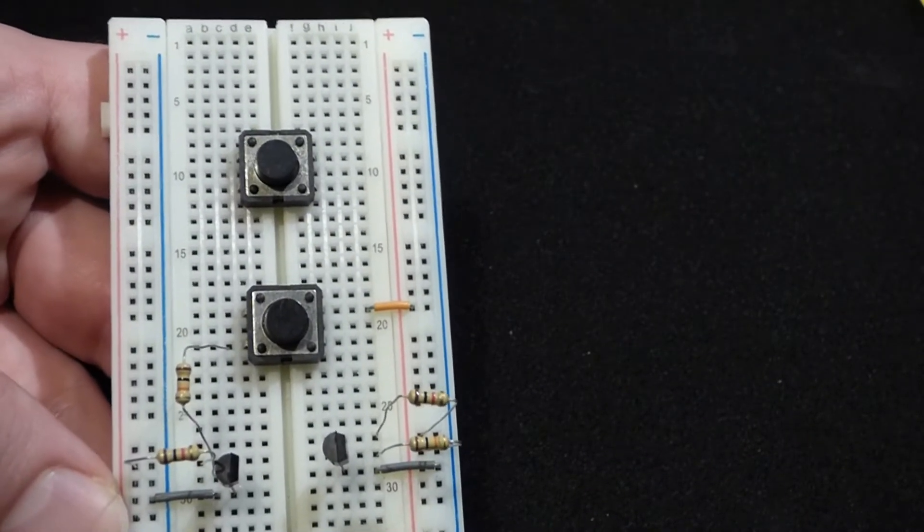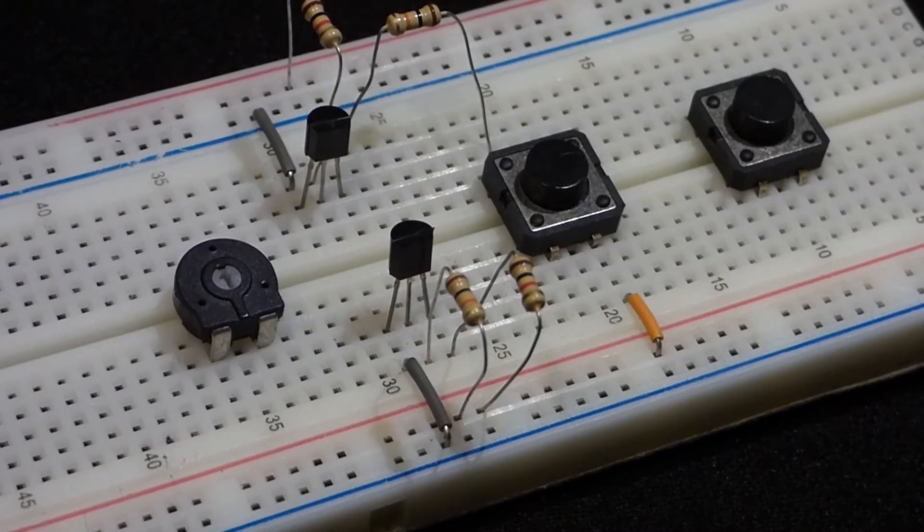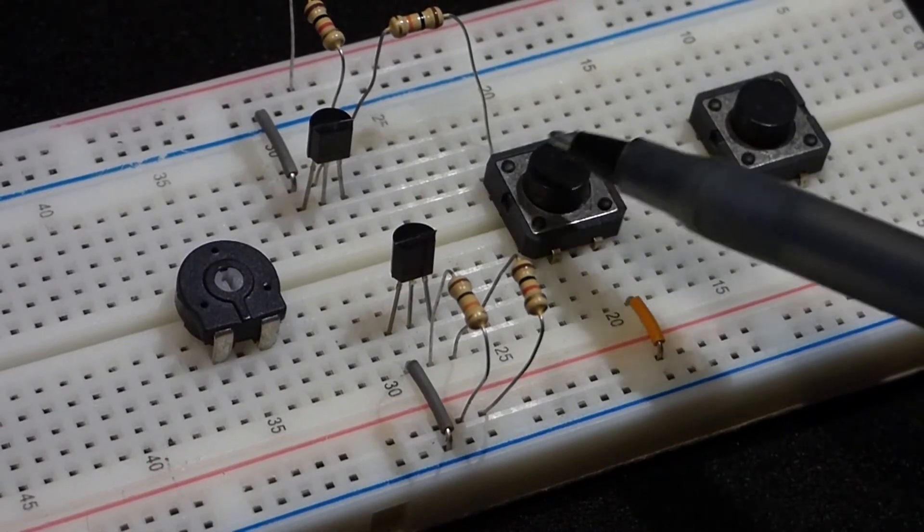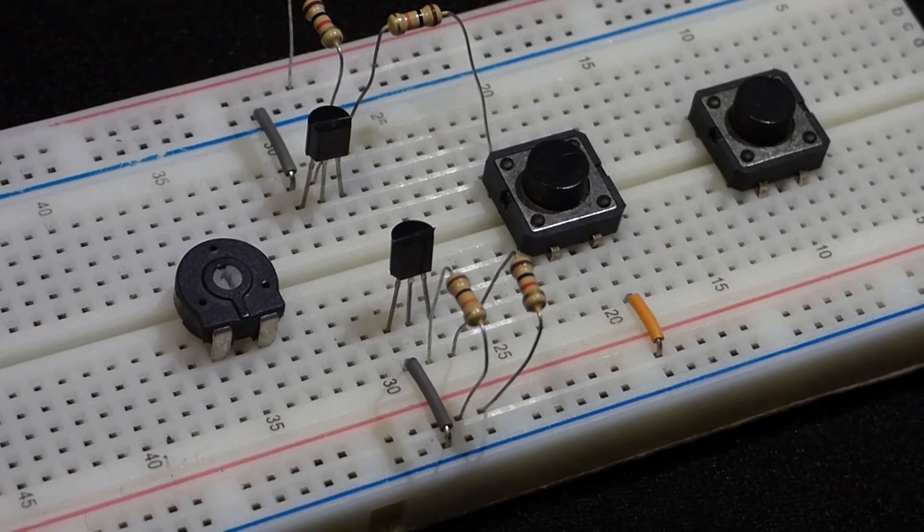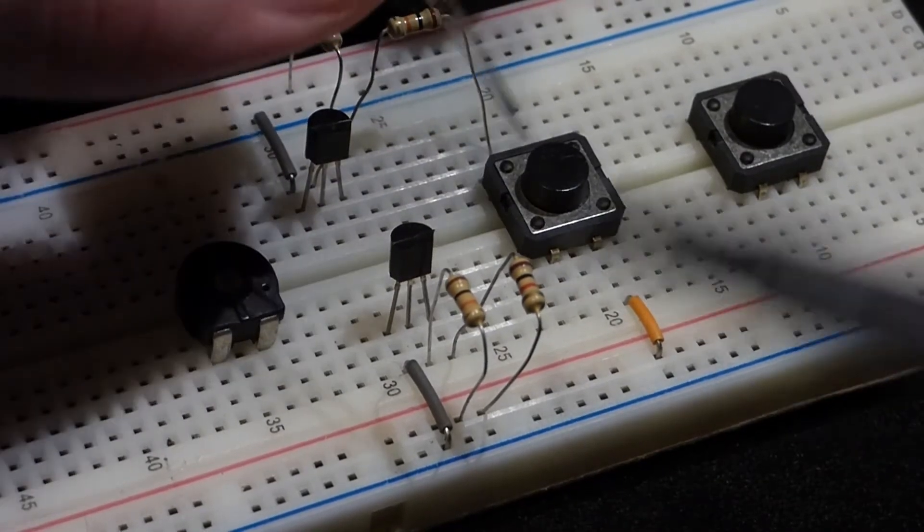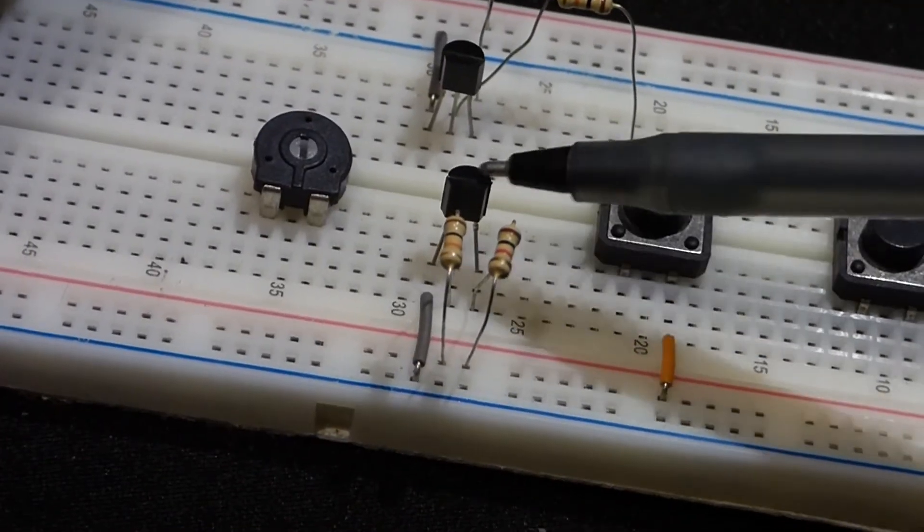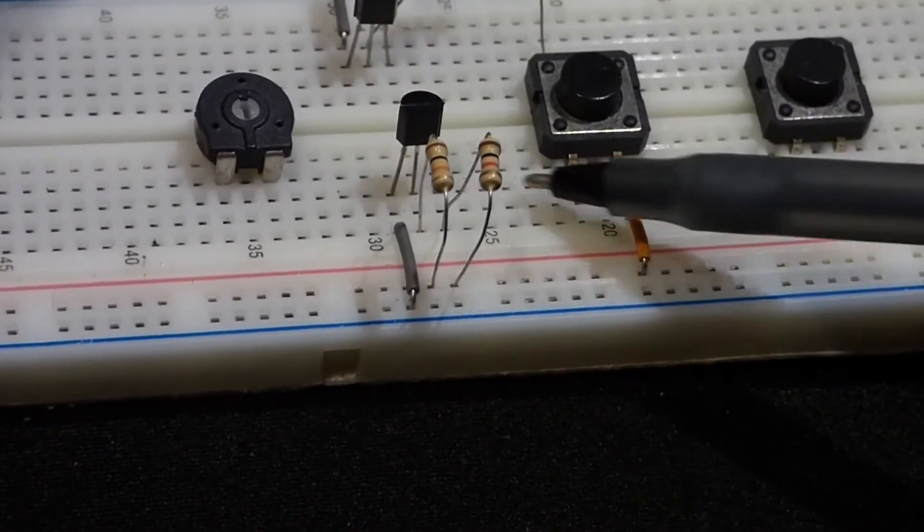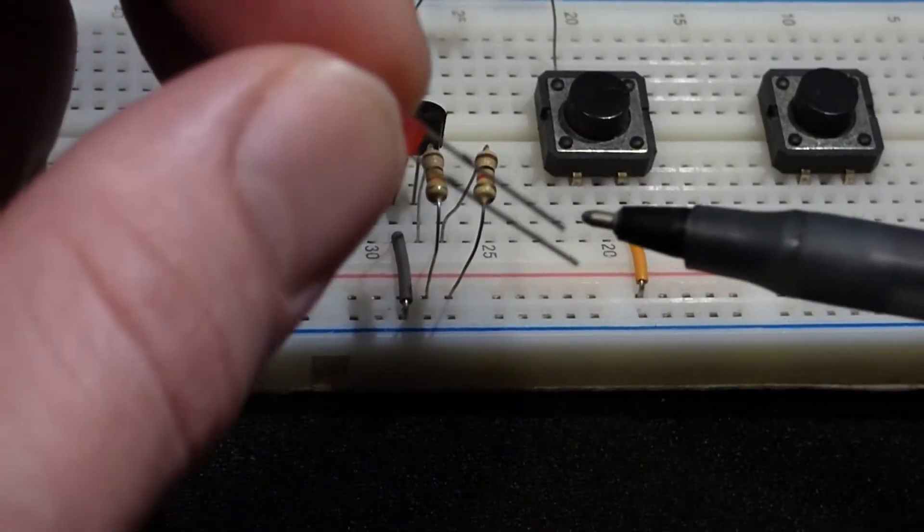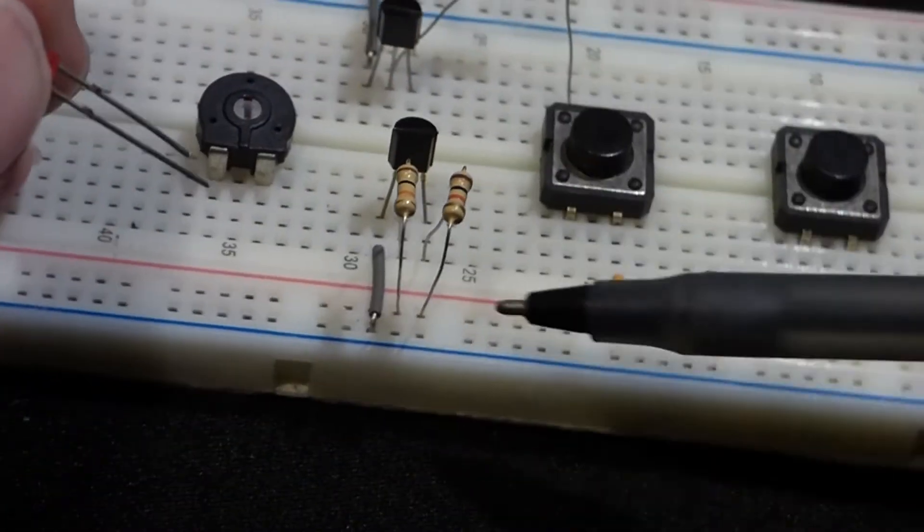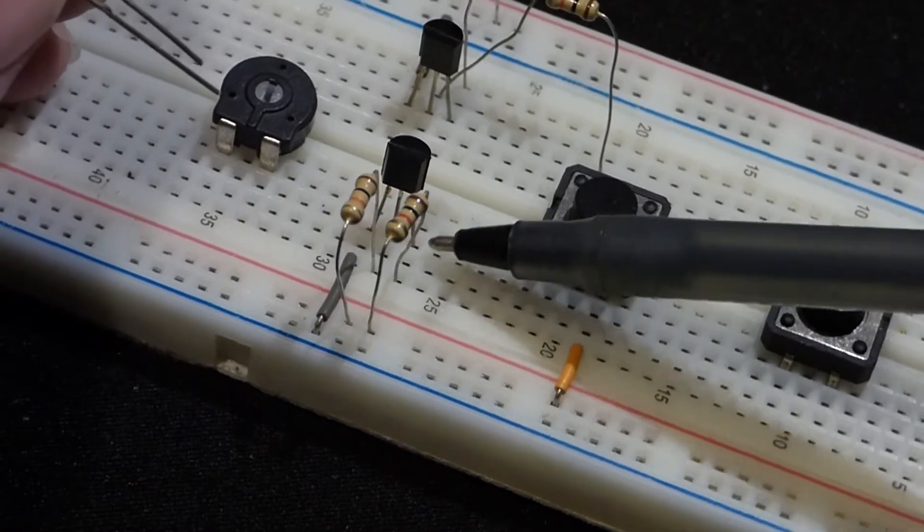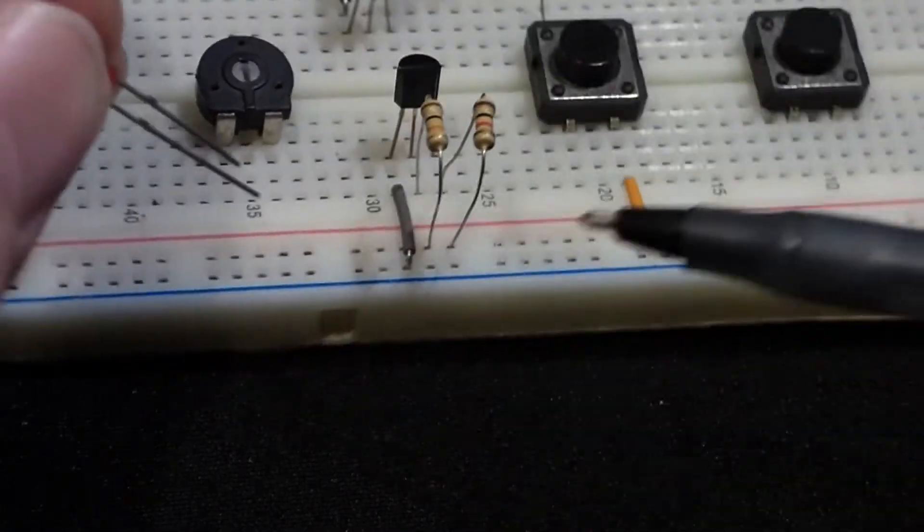So now in this circuit, the switch is the input. That's the one that we control to make the circuit do something. The output is actually the collector of this transistor here, and so that's where we're going to attach our LED.